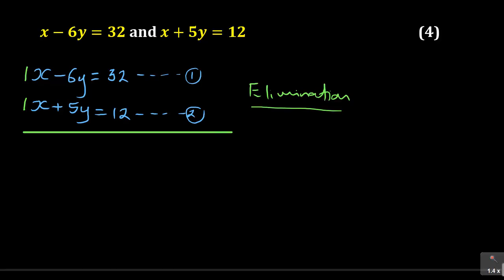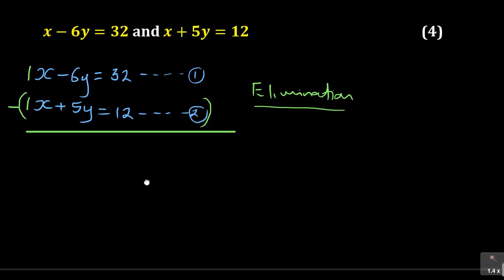You take equation 1 and equation 2. As you can see, they are already arranged — starting with x followed by y equals a number — matching each other. We have 1x and 1x. Once one of the variables is matching, it's already set up for us. So what you need to do is subtract equation 1 from equation 2, giving you: 1x minus 6y equals 32, minus 1x plus 5y equals 12.